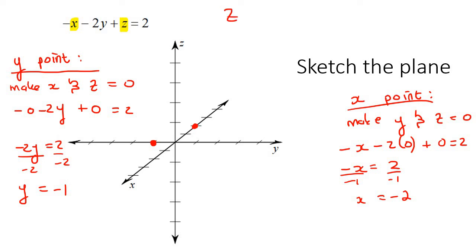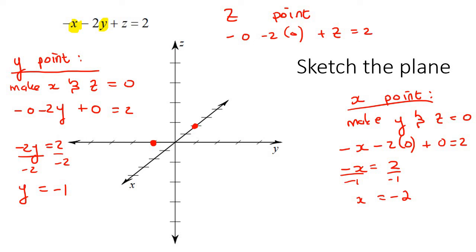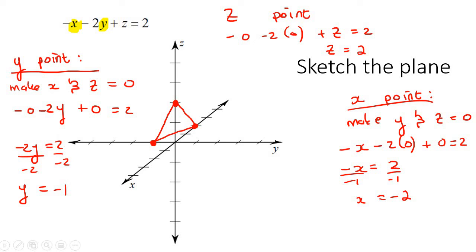Now for the z point, you make x and y zero. So that's minus zero minus two times zero plus z equals two, giving z equals two. Positive z goes this way, negative z the other way, so put a little dot there. Then take a straight edge, connect the dots, and there is your plane.